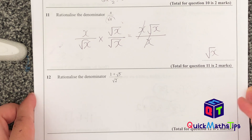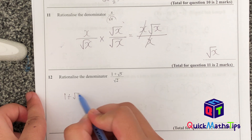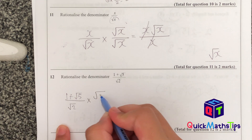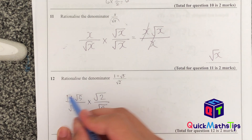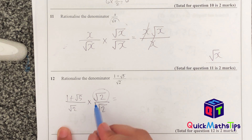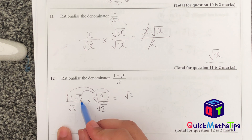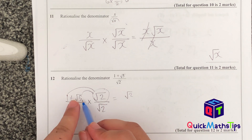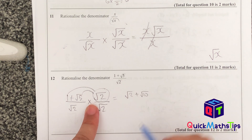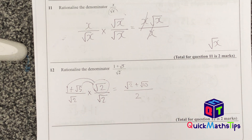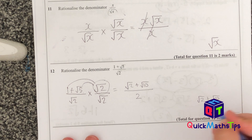To rationalise (1 + root 5) over root 2, multiply by root 2 over root 2. Expanding the numerator: 1 times root 2 = root 2; root 5 times root 2 = root 10, because both are inside roots so multiply 5 by 2. The denominator: root 2 times root 2 = 2. Answer: (root 2 + root 10) over 2.